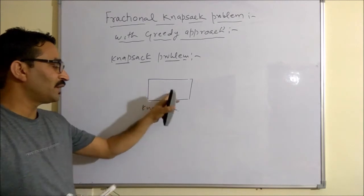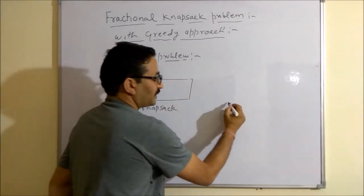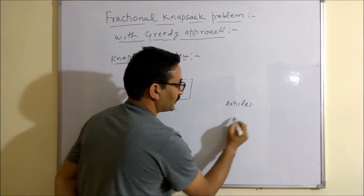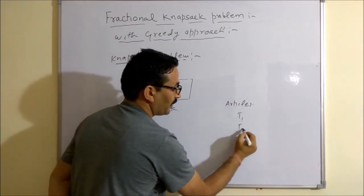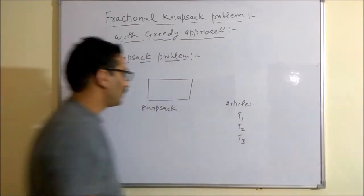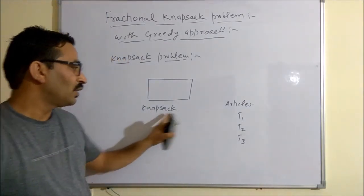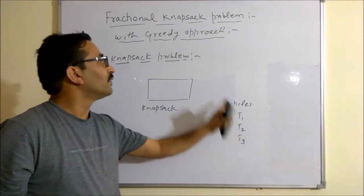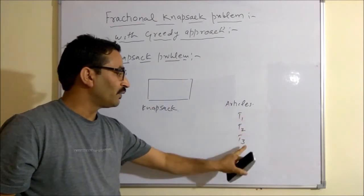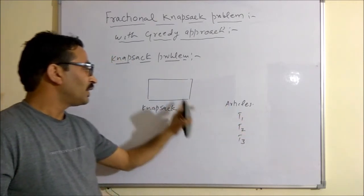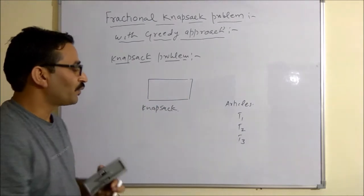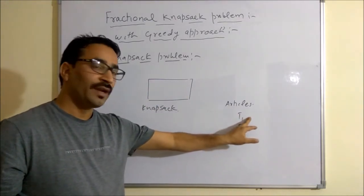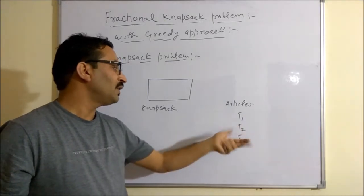You want to fill this Knapsack with some items — your articles. Suppose the articles are T1, T2, and T3. You want to fill this Knapsack with these articles. You can also pick the fractional part of T1, T2, and T3 so that you will get the maximum profit, because every article has some weight and profit associated with it.